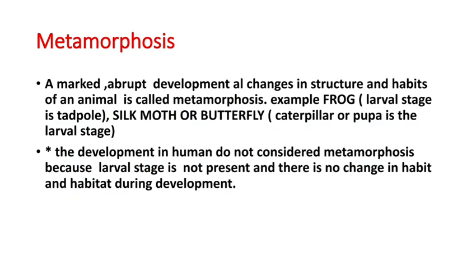The next topic is metamorphosis. Definition: marked and abrupt developmental changes in the structure, habit, and habitat of an animal is called metamorphosis. When an animal's development involves changes in its feeding habit, body structure, or habitat — the place where it lives — such development is called metamorphosis. For example, frog: the larval stage is tadpole, and tadpole developing into an adult frog involves many changes — that is called metamorphosis.